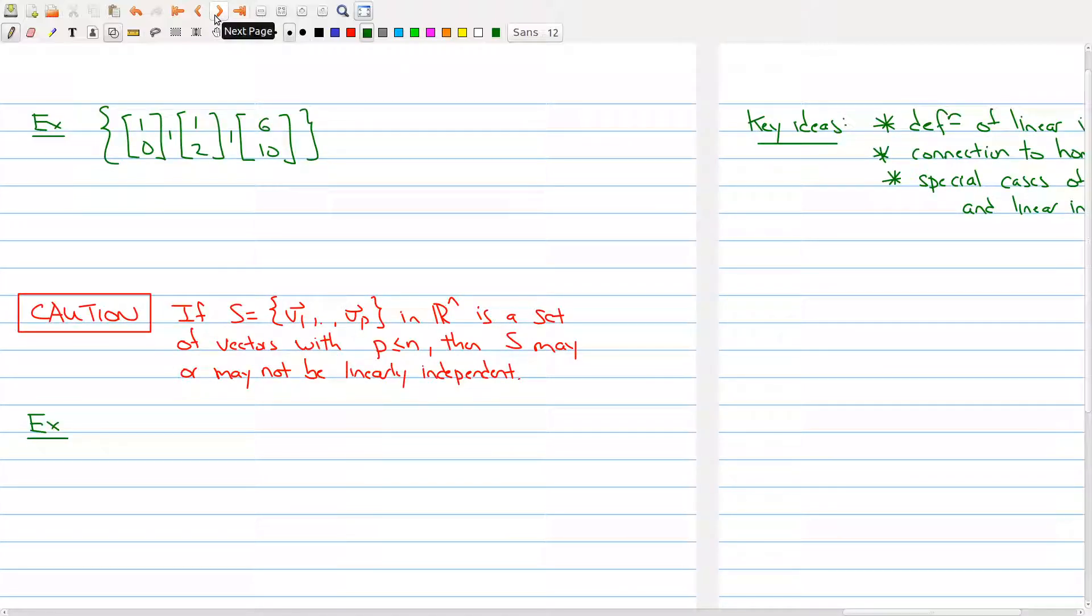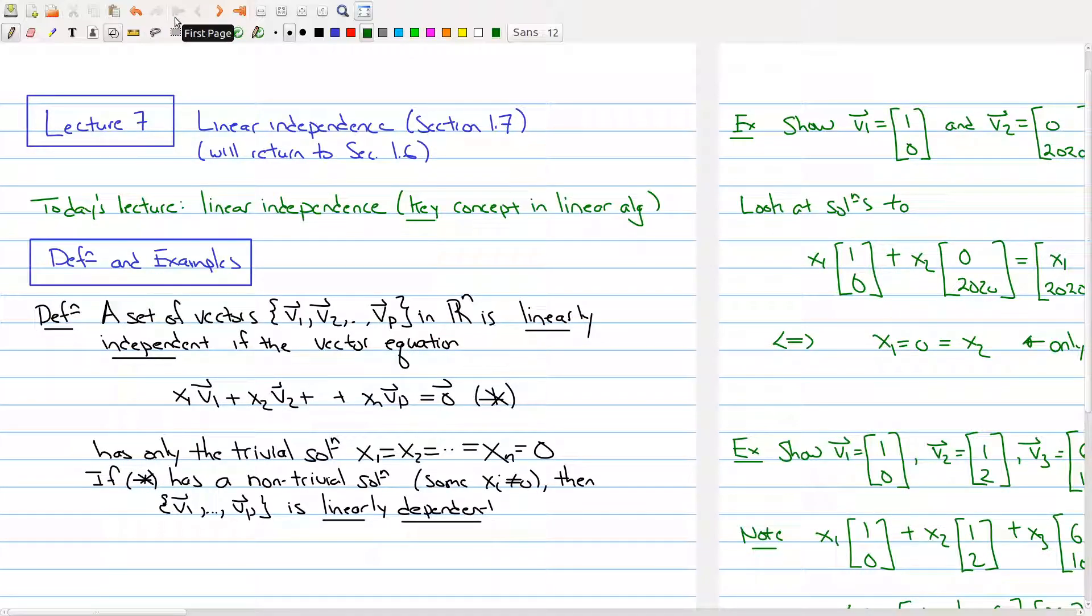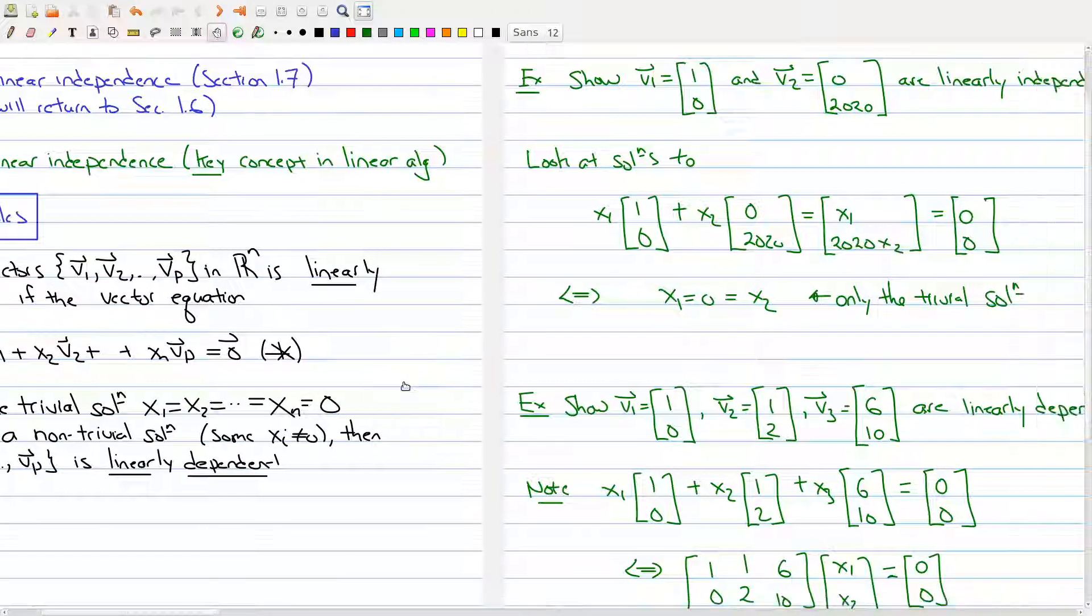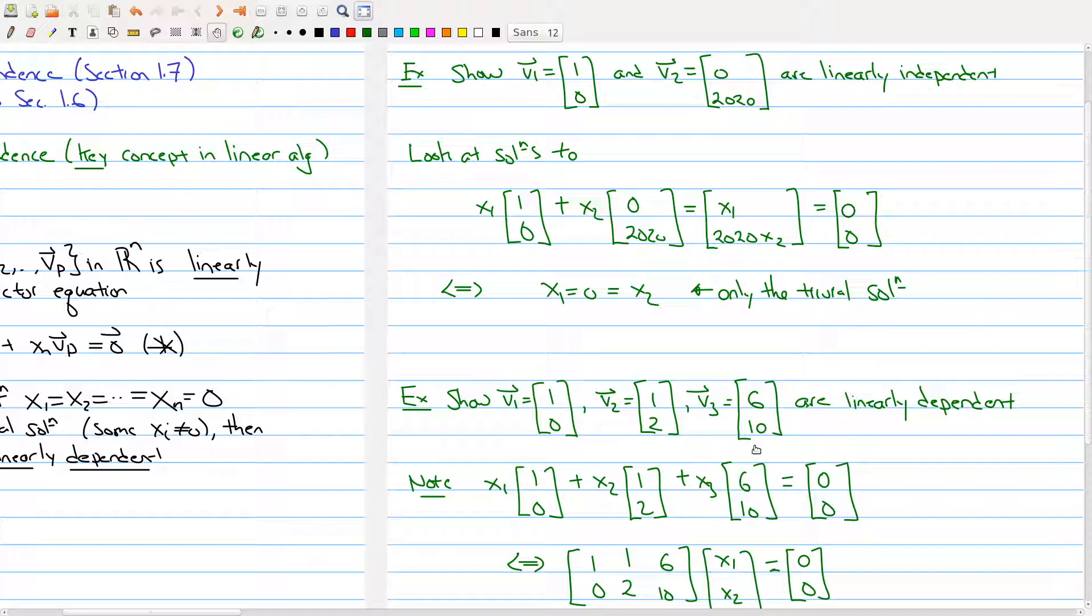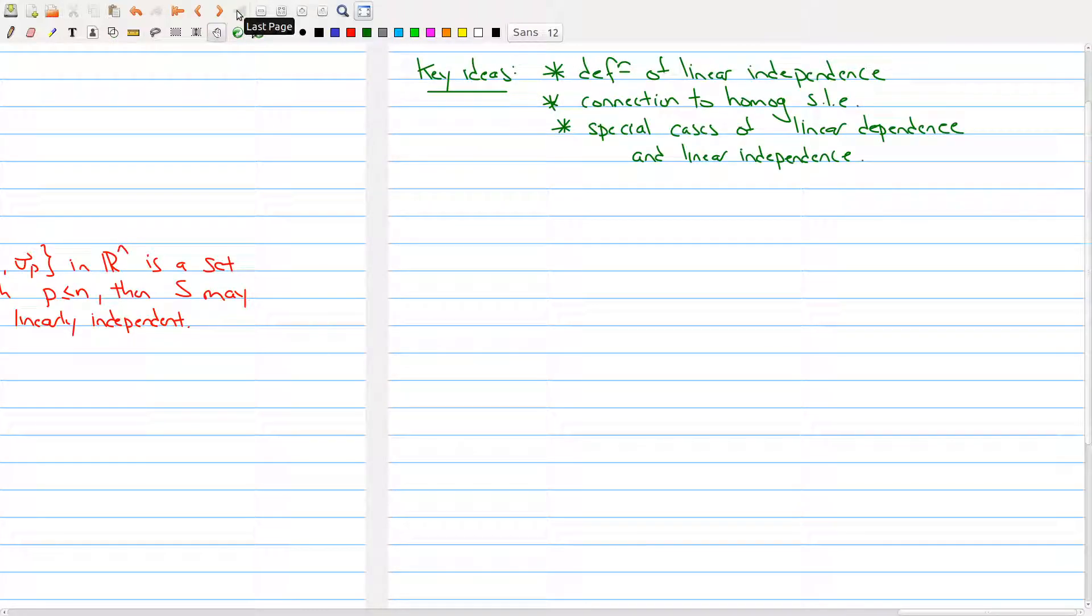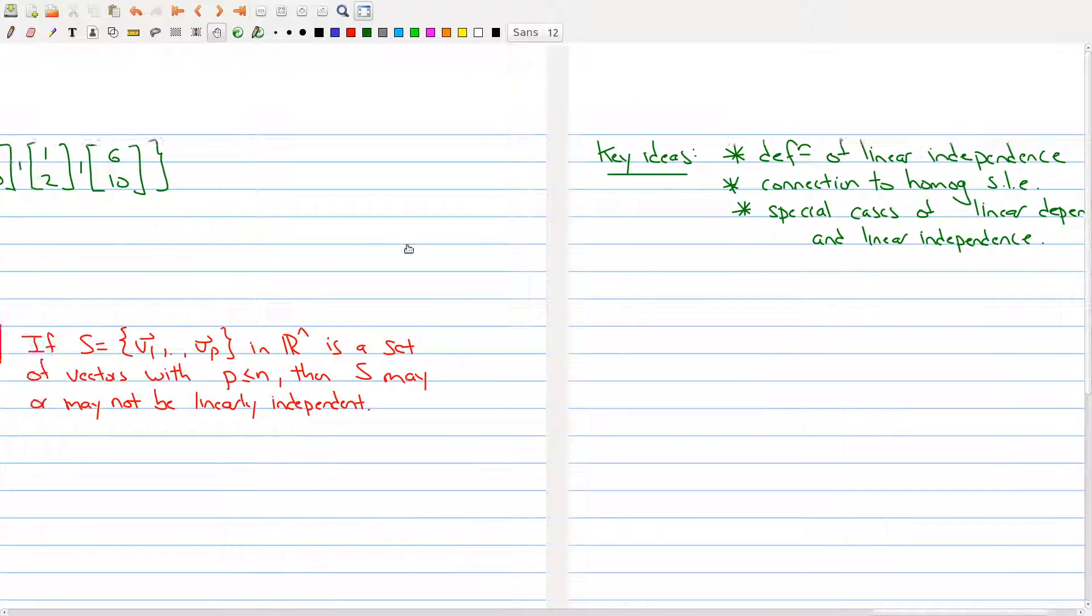So, let's look at this example right here. I have three vectors in R2. And in fact, let's go all the way to the beginning. We actually saw this. We saw these two vectors here, and we proved that they're linearly dependent. But the nice thing is, we don't actually need to do any of that right now.